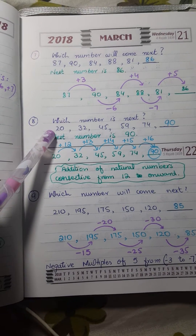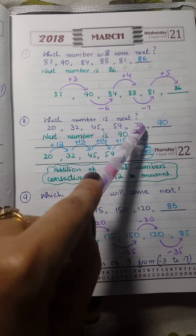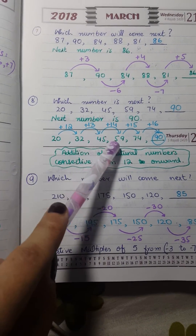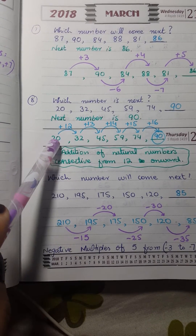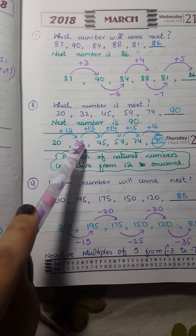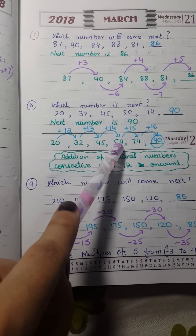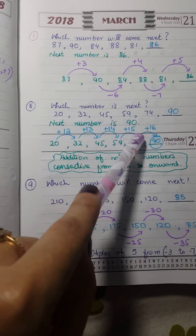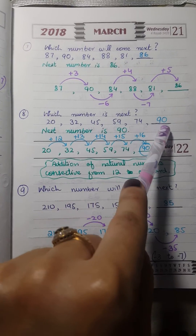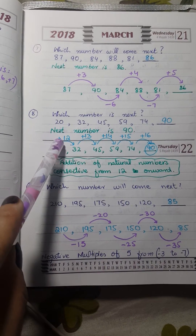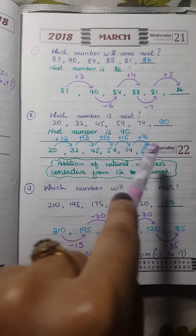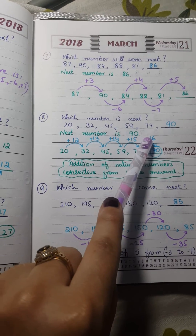The next question: which number will come next in 20, 32, 45, 59, 74? The next number will be 90. We first see the differences: 32 − 20 = 12, 45 − 32 = 13, 59 − 45 = 14, 74 − 59 = 15. The series of differences is 12, 13, 14, 15 — consecutive natural numbers. So the next difference will be 16, and 74 + 16 = 90. The answer is 90.